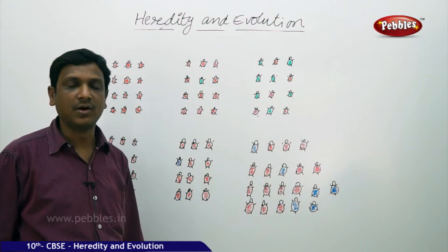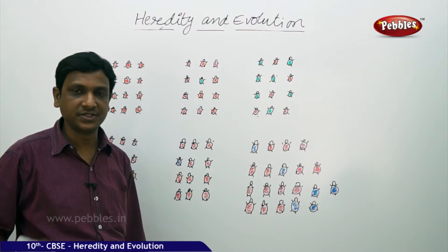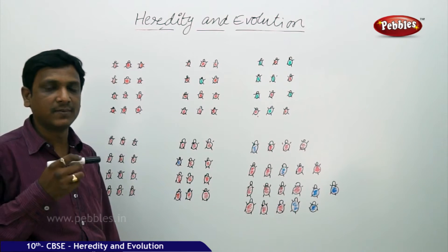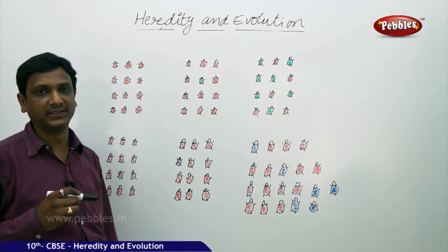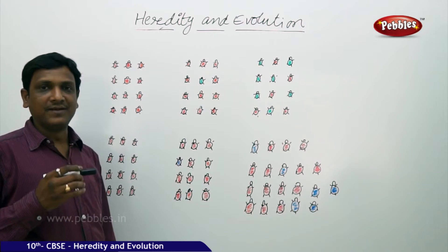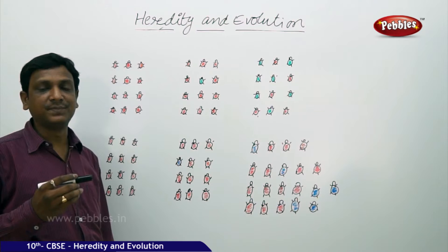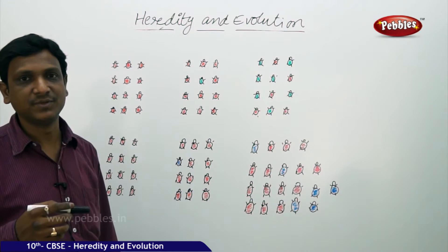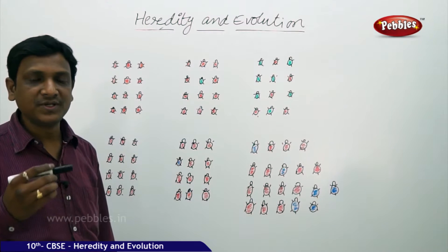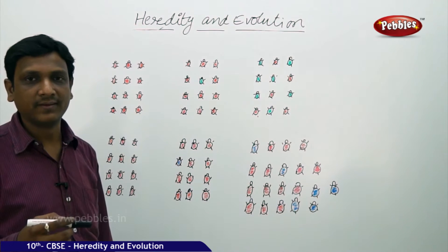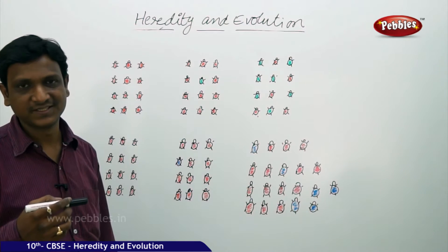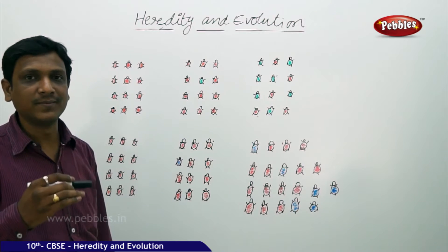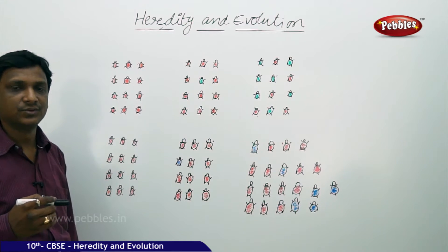We have seen how variations are inherited from one generation to another. Now let us move to the second part: evolution. We learned about heredity, and now let us see evolution — both are linked together. Evolution means the formation of a new species, which is a very gradual process. A new species comes from the pre-existing one by accumulation of many variations, along with some other factors.